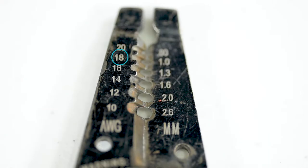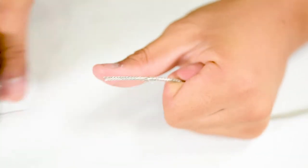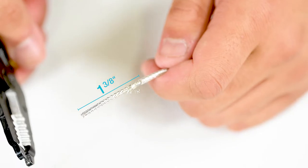First, use the 18 gauge hole of the wire stripper to remove 1 and 3 eighths inch of the outer insulation to expose the braided wire.